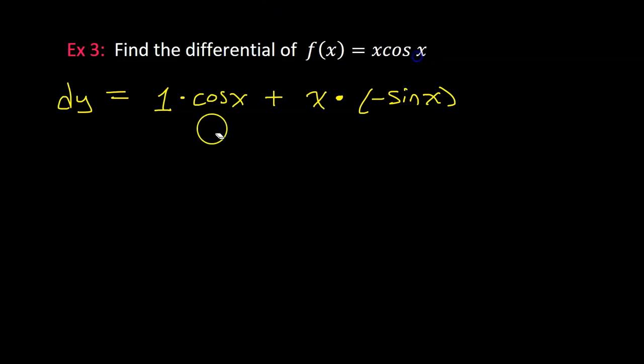The derivative of cosine is negative sine. So we just applied the product rule, but this is differential, so we just need to stick a dx on the end of it. I should probably put parentheses around this whole thing, so the dx is on all of this. Obviously, I'm going to simplify this down a little bit. For example, we're not going to put the 1 in there, so I'm going to have cosine x, and then the negative sign, I'm going to take that negative sign and put it out in the front, so it'll be a minus instead of a plus.